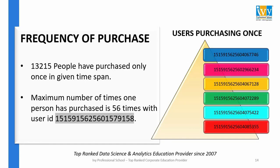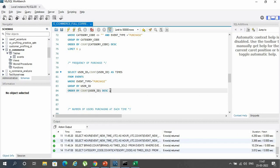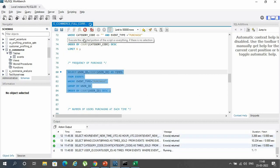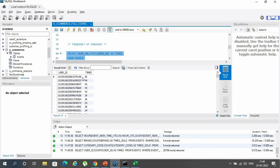The next factor is frequency of purchase. It was seen that almost 13,000 people had purchased only once in the given time span of 5 months. What was surprising was one user — with a user ID highlighted in grey — who had purchased 56 times in the given time span. The highlighted MySQL query gives the frequency of purchase, and the result confirms this user purchased the most, at 56 times.